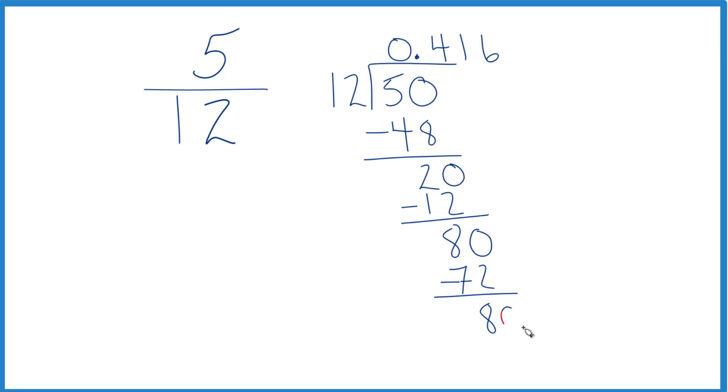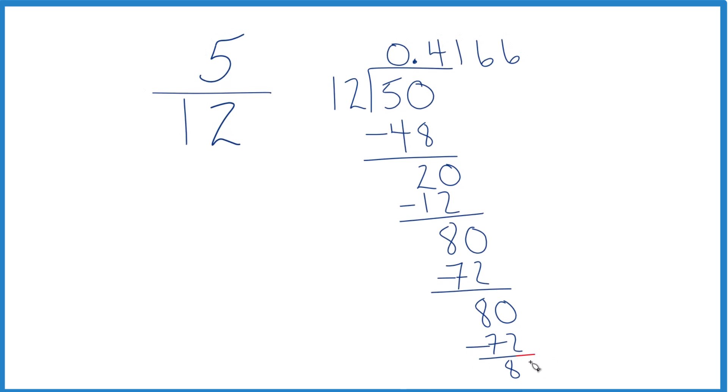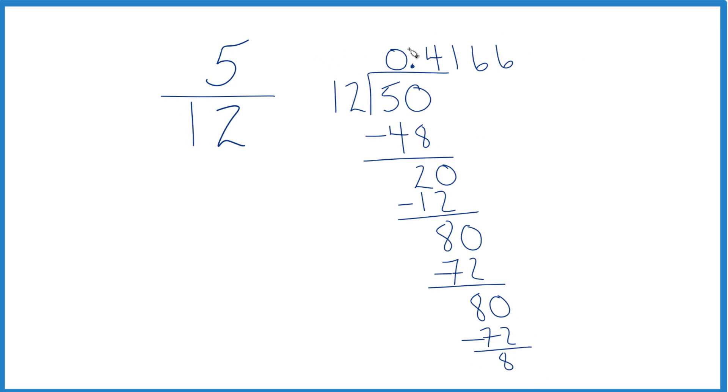We'll call it 80, move over 1 here. 6 times 12, that gives us 72. Subtract, we get 8. And you can see where this is going, the 6 is just going to keep going on and on.